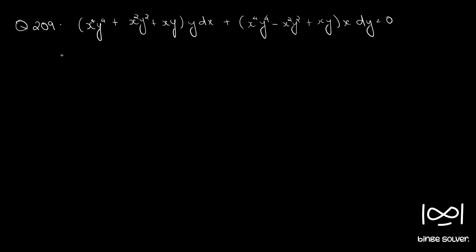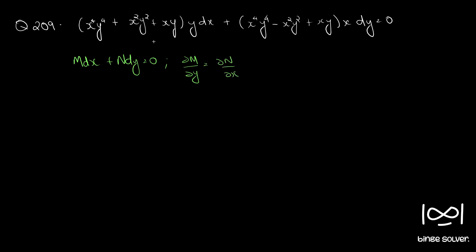Our given differential equation is in the form M dx plus N dy equal to 0. For this equation to be exact, the necessary and sufficient condition is ∂M/∂y should be equal to ∂N/∂x. Since there is a plus and minus sign and all other terms are the same, we can clearly guess ∂M/∂y will not be equal to ∂N/∂x.